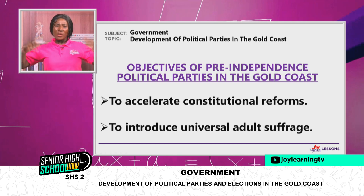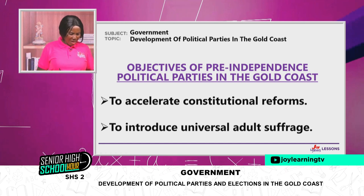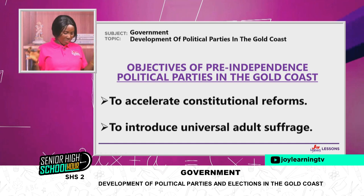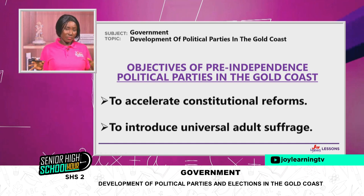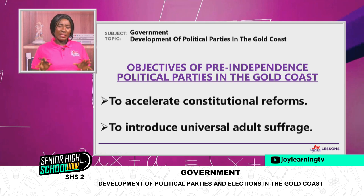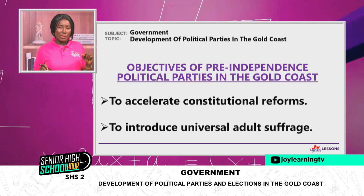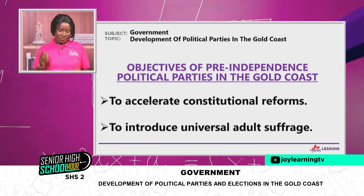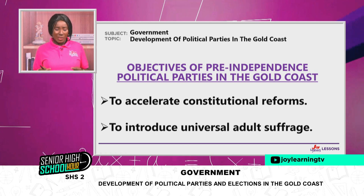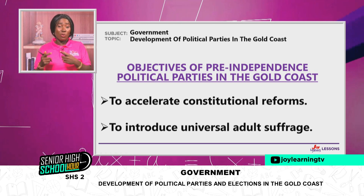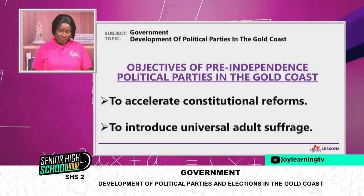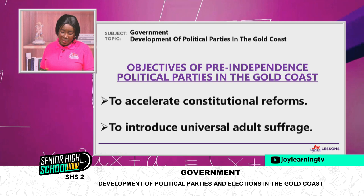Then they had gone to war and returned to meet the Alam Ban's constitution of 1946. It constituted a legislative assembly of 31 members — very large — but it still did not give the African or the educated elite of the Gold Coast the chance to hop onto administration. A faster rate of constitutional reform was what they wanted.